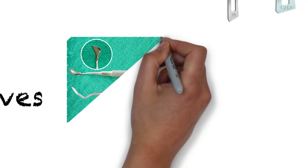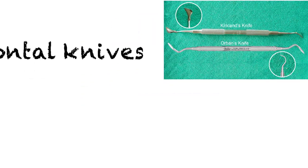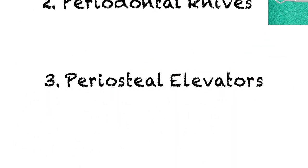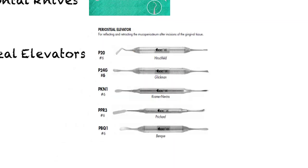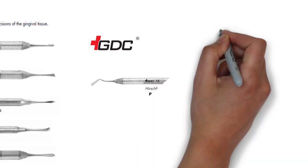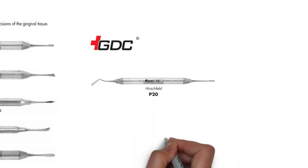Next, we require periodontal knives, and the most commonly used ones are the Kirkland and the Orban knife. A range of periosteal elevators are also available, such as the Hirschfeld, Glickman, Pritchard, etc. My all-time favorite is the P20, which has a toe-like end on one side facilitating smooth atraumatic flap elevation, and a beveled contra-angle tip on the other side that is easy to use on the palatal and the lingual side.